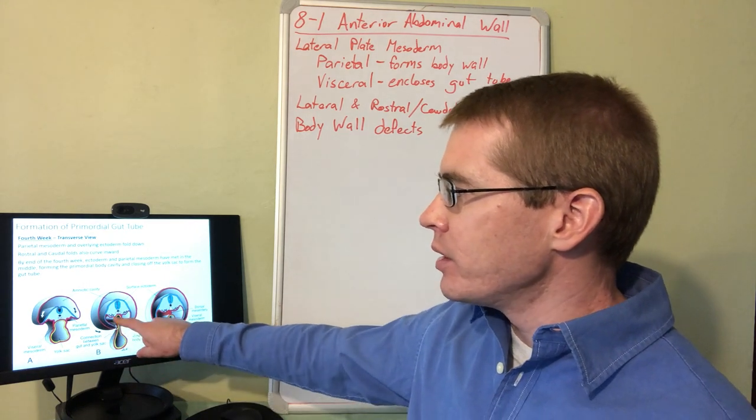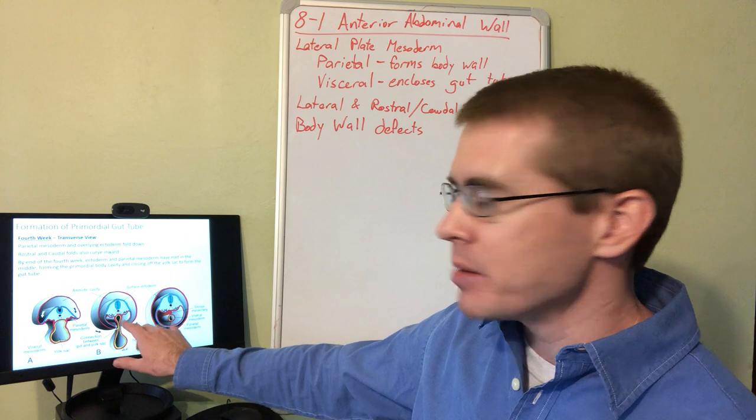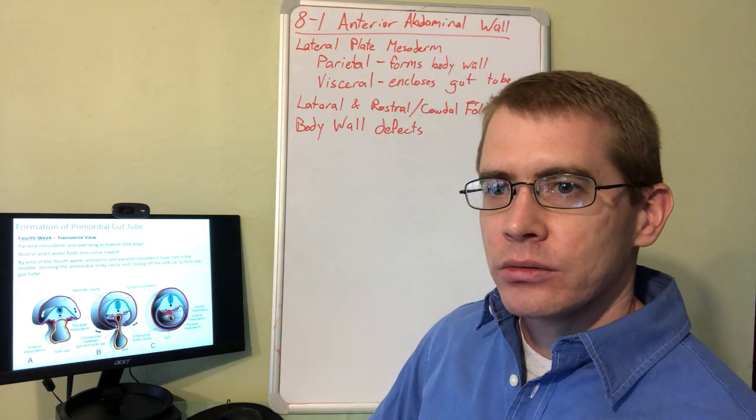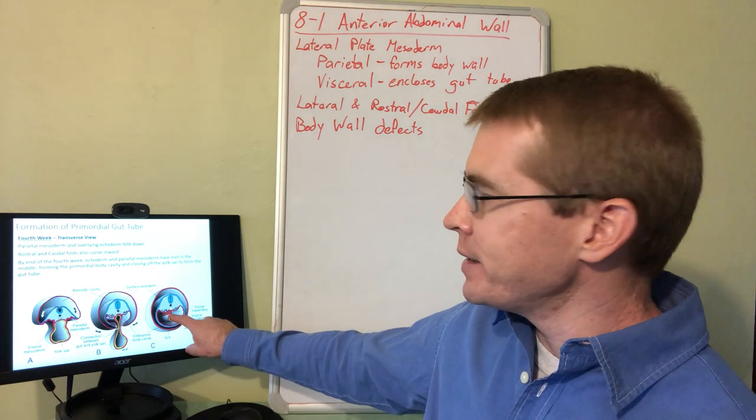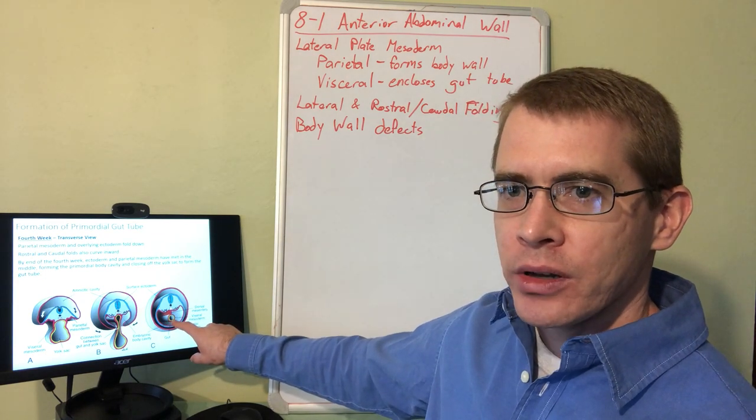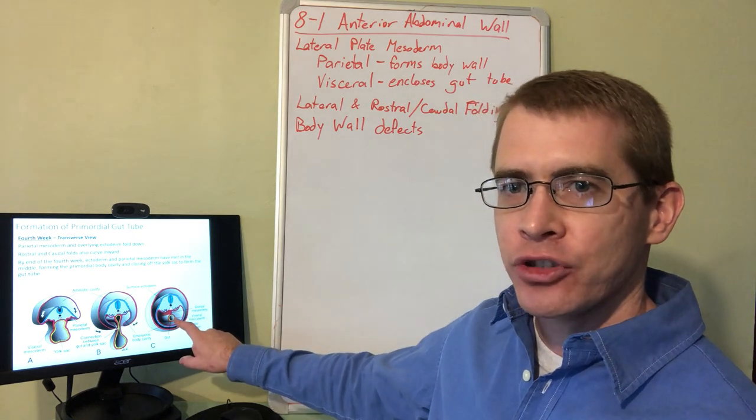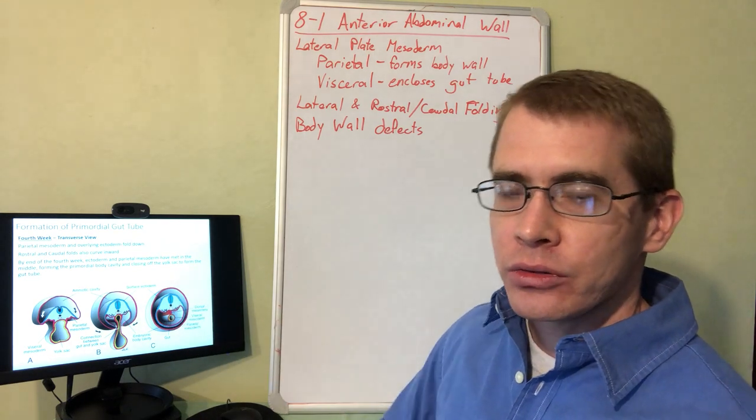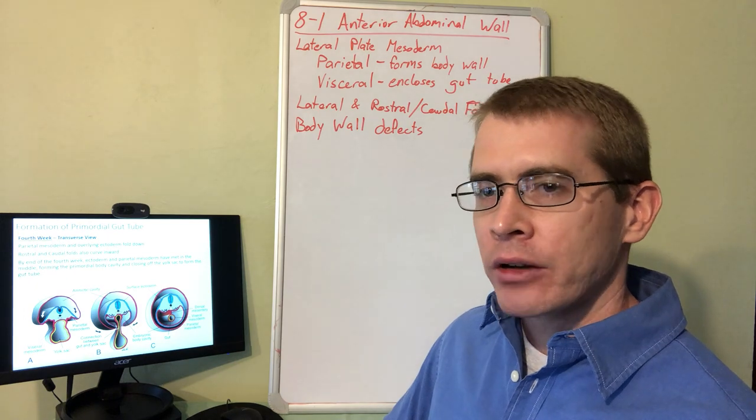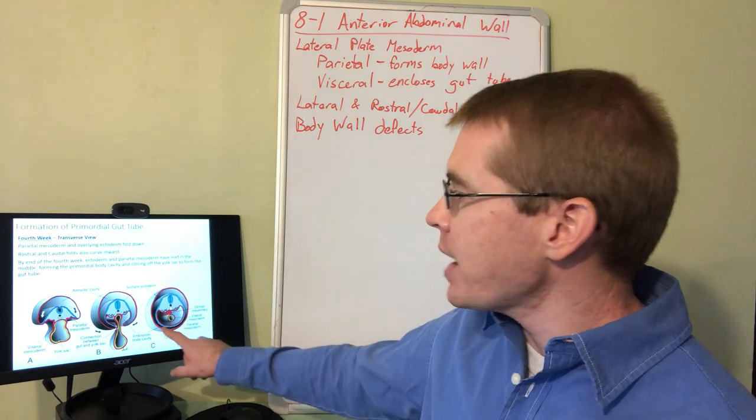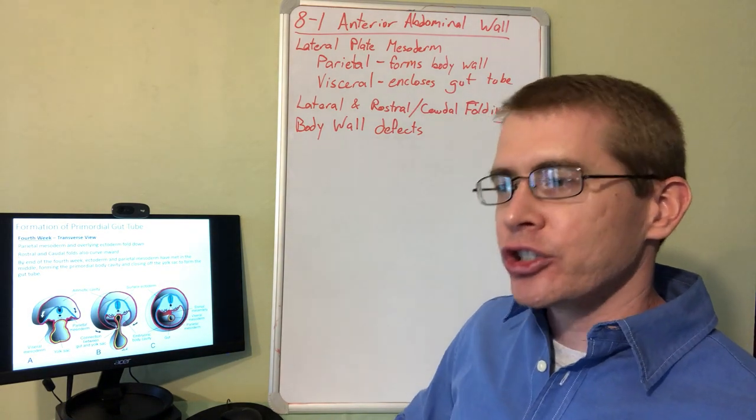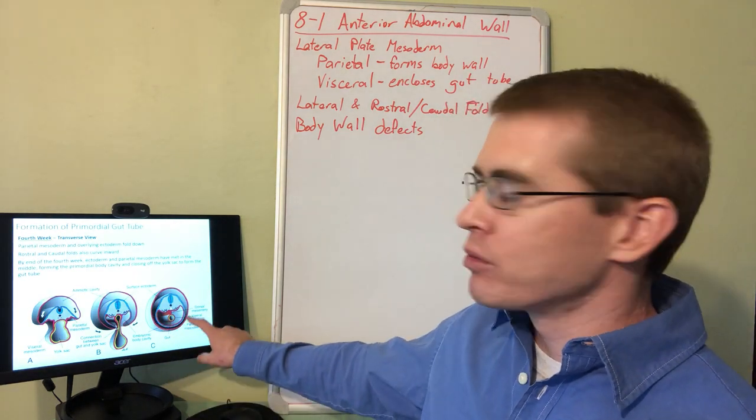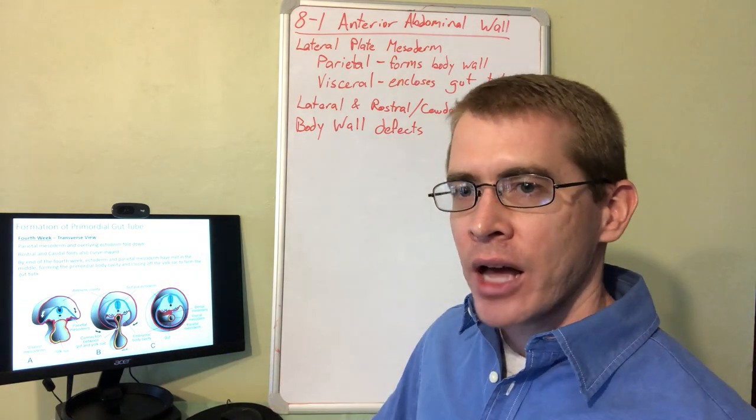During this process, the yolk sac shrinks in some areas and gets encompassed by the visceral lateral mesodermal layer. The gut tube is formed from the yolk sac, forming your entire GI tract, stomach, and intestines, surrounded by the visceral layer of lateral mesoderm. The outside of the body wall, the anterior musculature and dermis, is formed by the parietal layer of that lateral mesoderm.